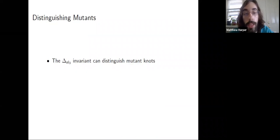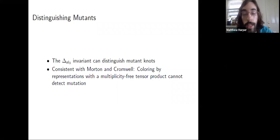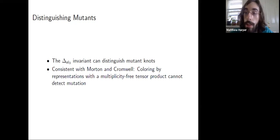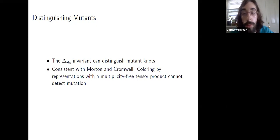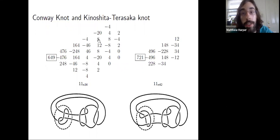The SL3 invariant can distinguish mutation. This is consistent with the result of Morton and Cromwell: since our invariant is not multiplicity-free — looking at the tensor product decomposition, we have a repeated summand — we have the potential to distinguish mutants. Here are the invariants for the Conway knot and the Kinoshita-Terasaka knot.